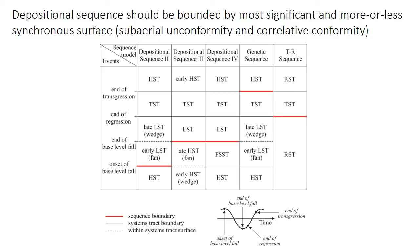The maximum regressive surface and the maximum flooding surface are diachronous across their length due to sedimentation rate variations, and the regressive surface of marine erosion and the transgressive ravine surface are even more diachronous. Therefore, the best choice for a sequence boundary, if you're going to choose one, is the subareal unconformity and the correlative conformity, which is the offshore equivalent or offshore continuation of that.